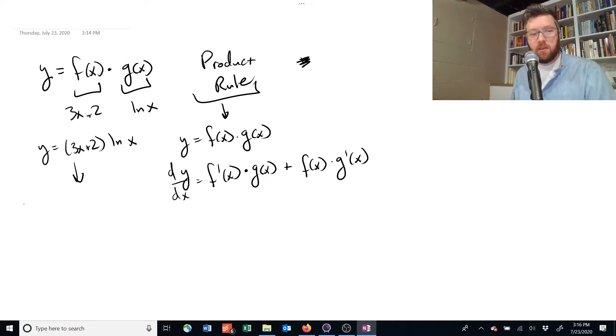the derivative of this first term, this first function 3x plus 2, is really simple. It's just 3, because x, we can imagine this is x to the power of 1. We bring the 1 down,